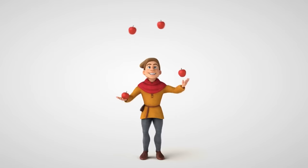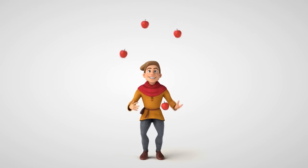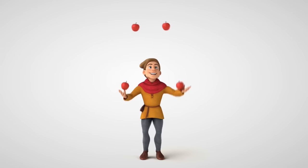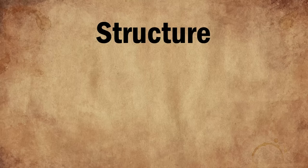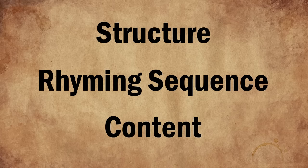There are a few different things that you need to manage all at the same time when you're writing a Shakespearean style sonnet: the structure, which is made up of a couple of different elements, the rhyming sequence, and the content itself. So let's start with the structure.